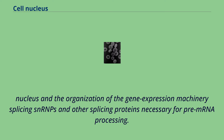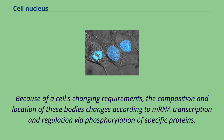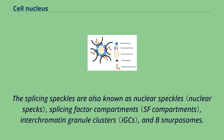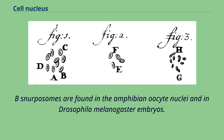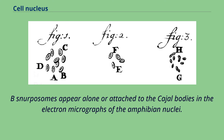Because of a cell's changing requirements, the composition and location of these bodies changes according to mRNA transcription and regulation via phosphorylation of specific proteins. Splicing speckles are also known as nuclear speckles, splicing factor compartments, interchromatin granule clusters, and B-snurposomes. B-snurposomes are found in the amphibian oocyte nuclei and in Drosophila melanogaster embryos, and appear alone or attached to cell bodies in electron micrographs of the amphibian nuclei. IGCs function as storage sites for the splicing factors.